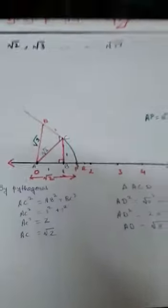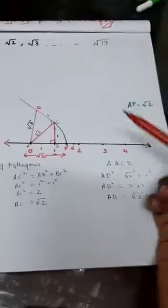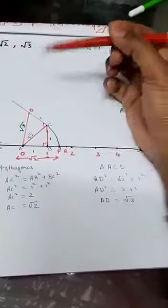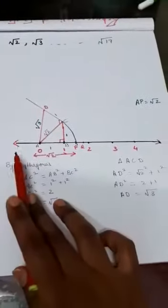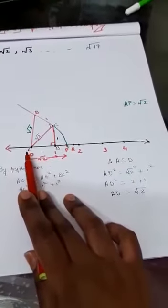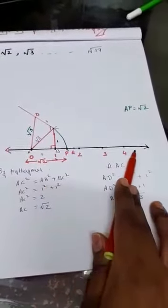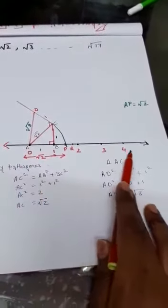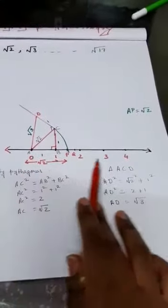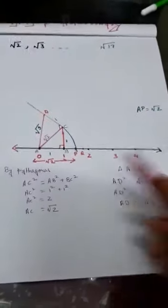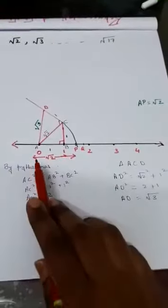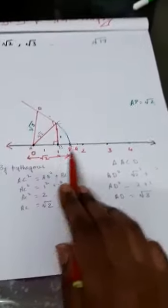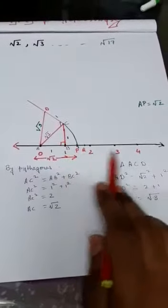Students, just learn how to represent root 2 on our number line. First of all, you have to make a number line of equal units. I have taken these units equally divided. It's up to you whether you want to divide it in centimeters or inches, whatever you want. But remember that this distance should be equal. There should not be any differences in the distances.